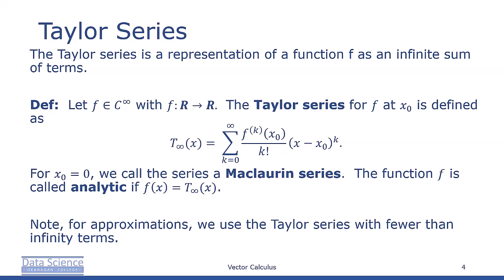The Taylor series for f at x_0 is defined as T_∞(x) equals the sum, k equals 0 to infinity of the kth derivative of f evaluated at x_0 divided by k factorial, times (x - x_0) to the power of k.